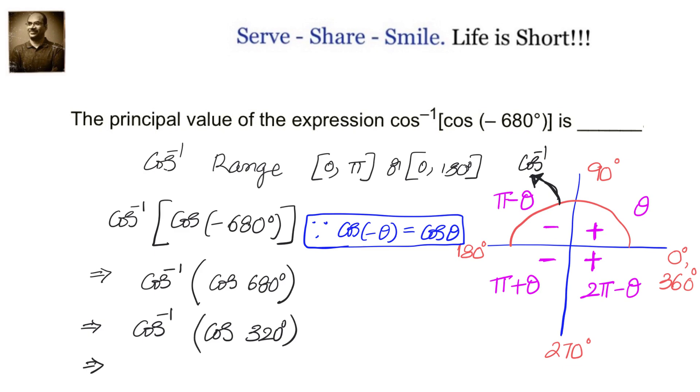320 degrees is in which quadrant? It is in fourth quadrant. The angle in fourth quadrant is given by 2 pi minus theta if theta is the first quadrant angle. And cos is positive in fourth quadrant.